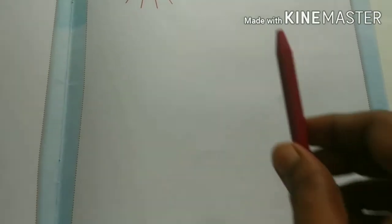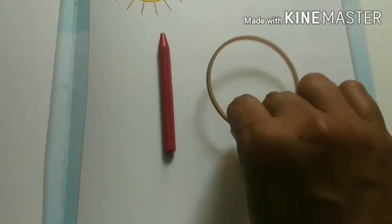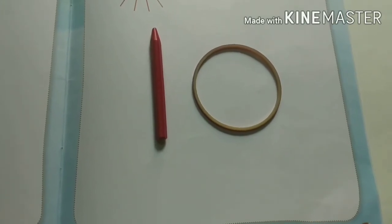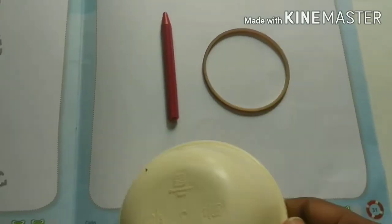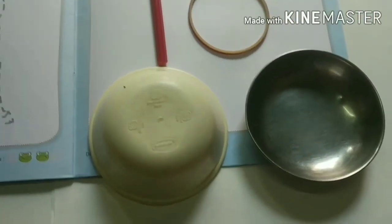You will learn by using red crayon, bangle, or any circle object. For an example, bowl, dish. Okay kids?